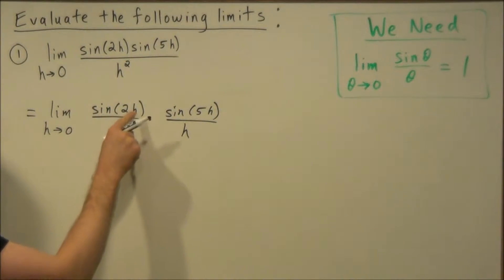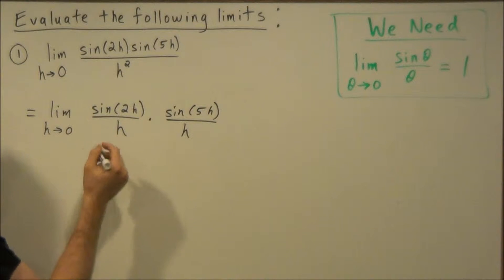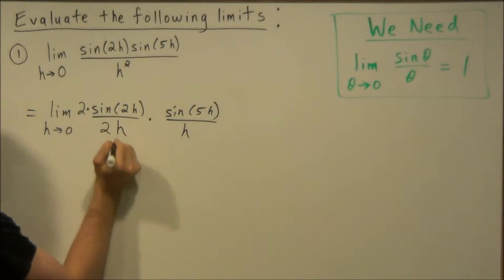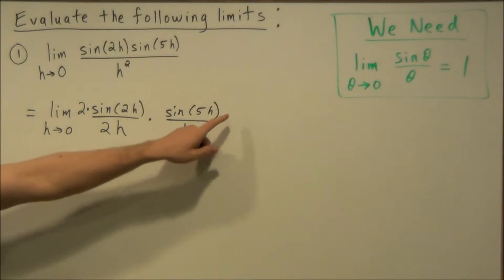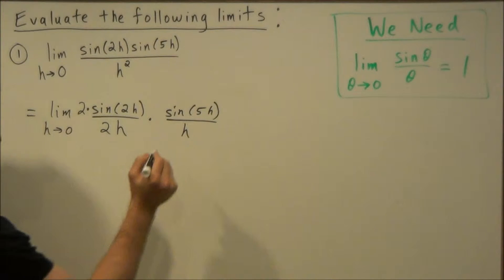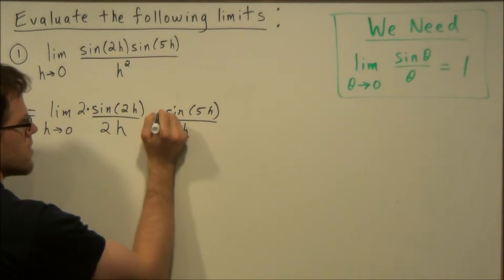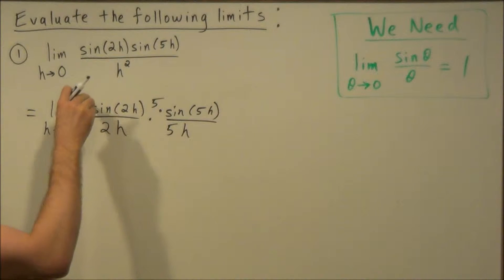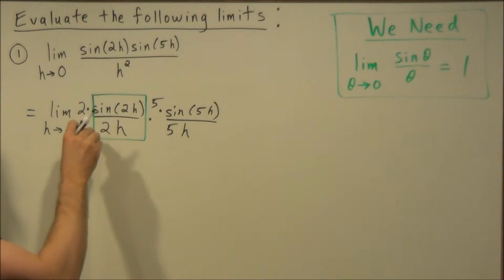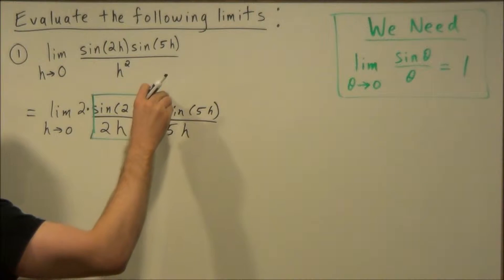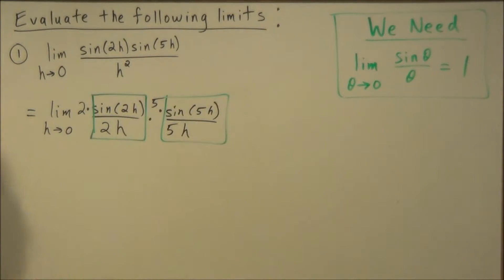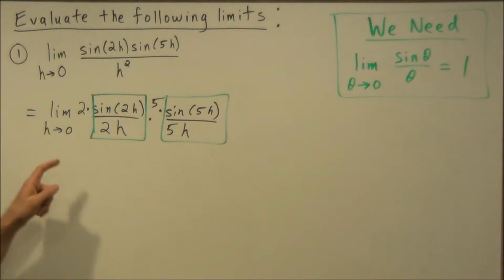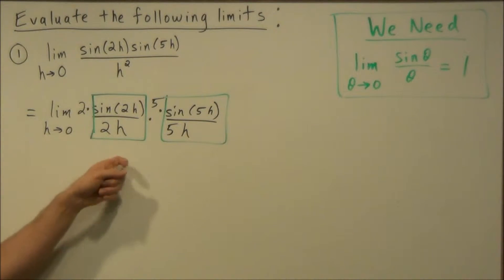We need to generate a match between the sine function and its denominator. This first fraction says two h, so we need the denominator to say two h as well. We multiply the first fraction by two over two, and similarly the second fraction by five over five. The highlighted portions will each go to one as h approaches zero.